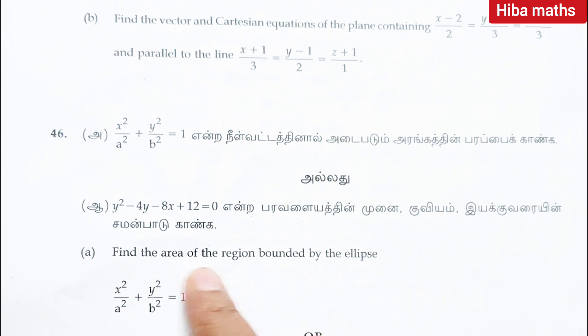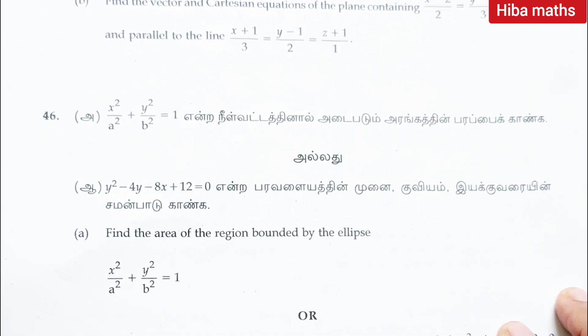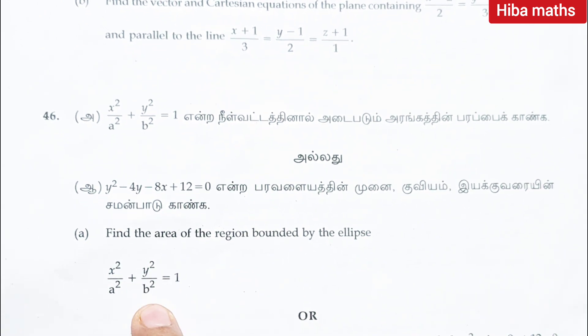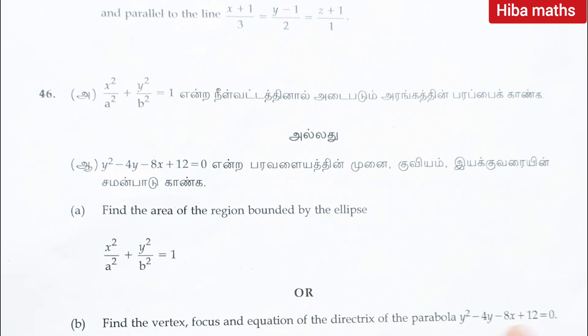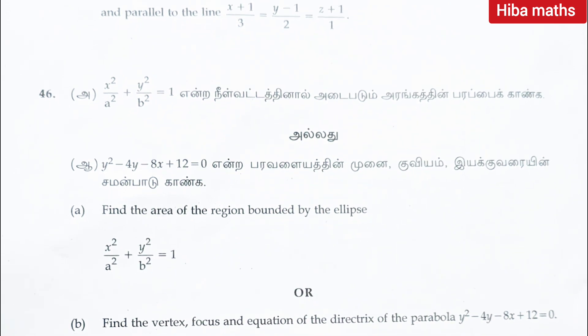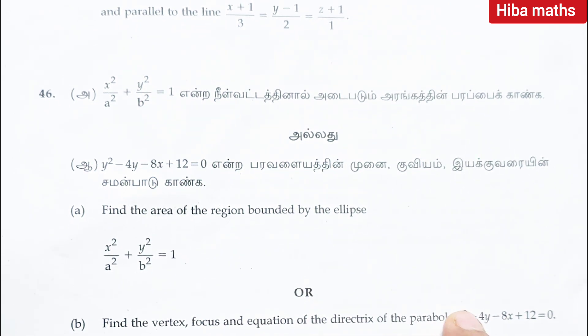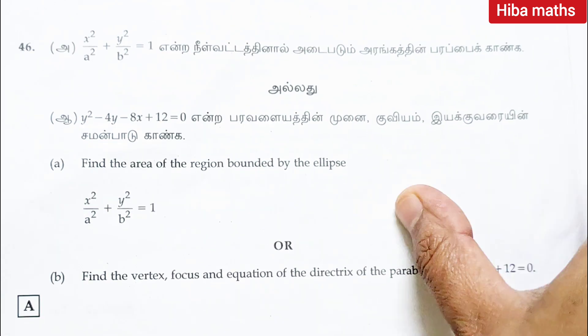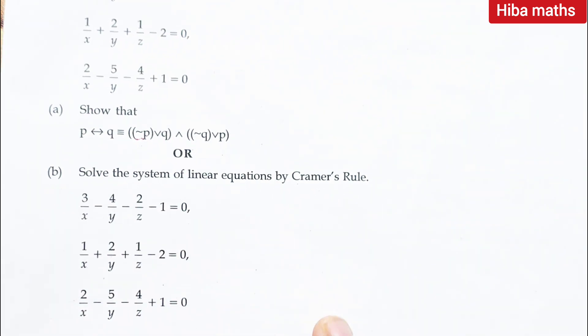Question 49: find the area of region bounded by the ellipse x square by a square plus y square by b square is equal to 1. Question 50: find the vertex, focus and equation of directrix of a parabola y square minus 4y minus 8x plus 12 is equal to 0.